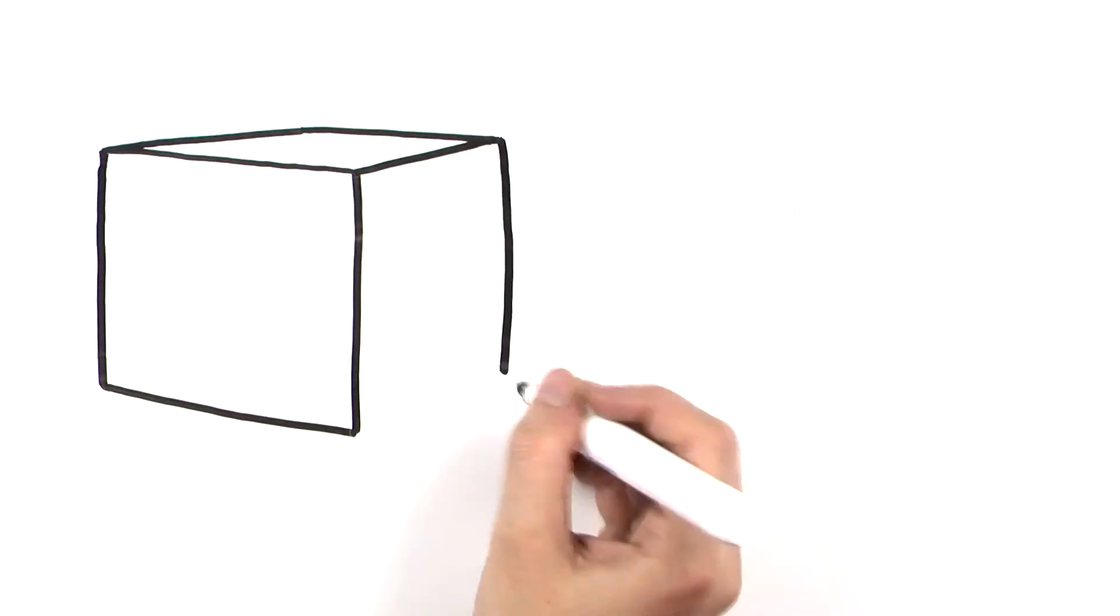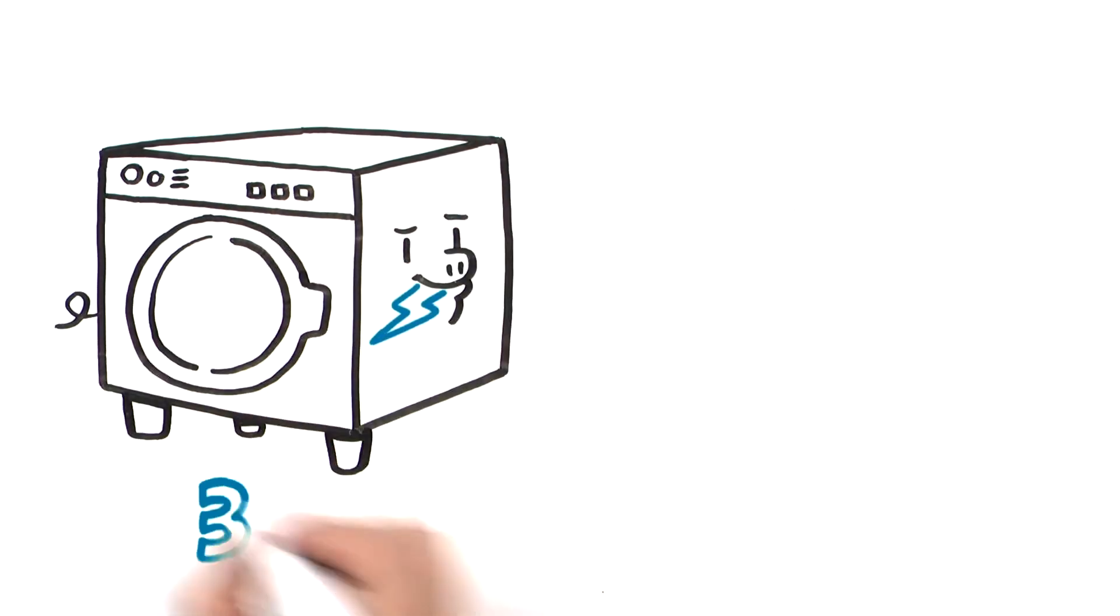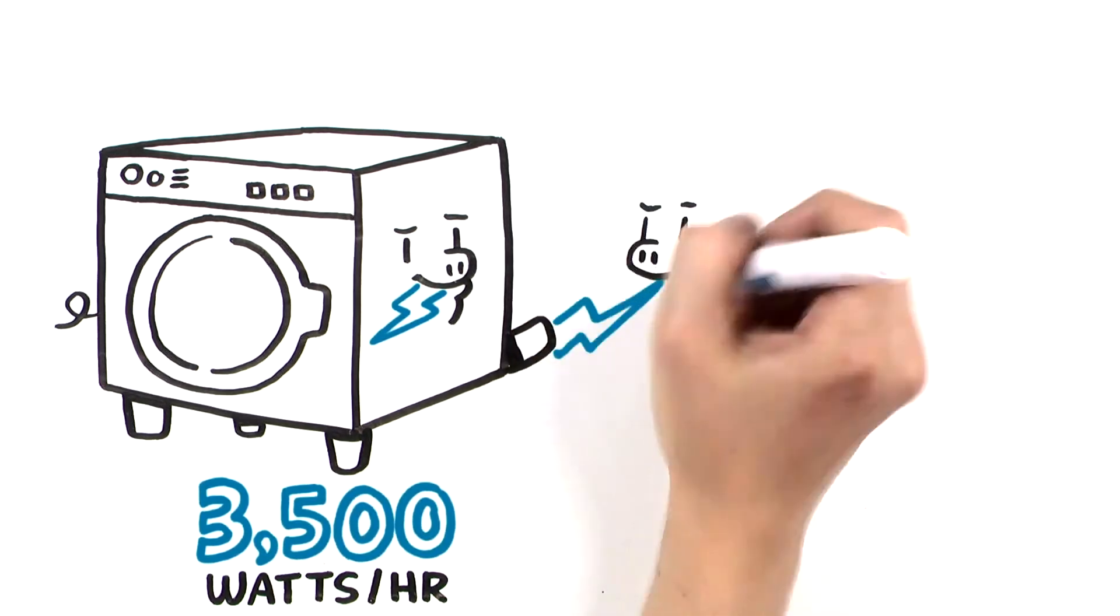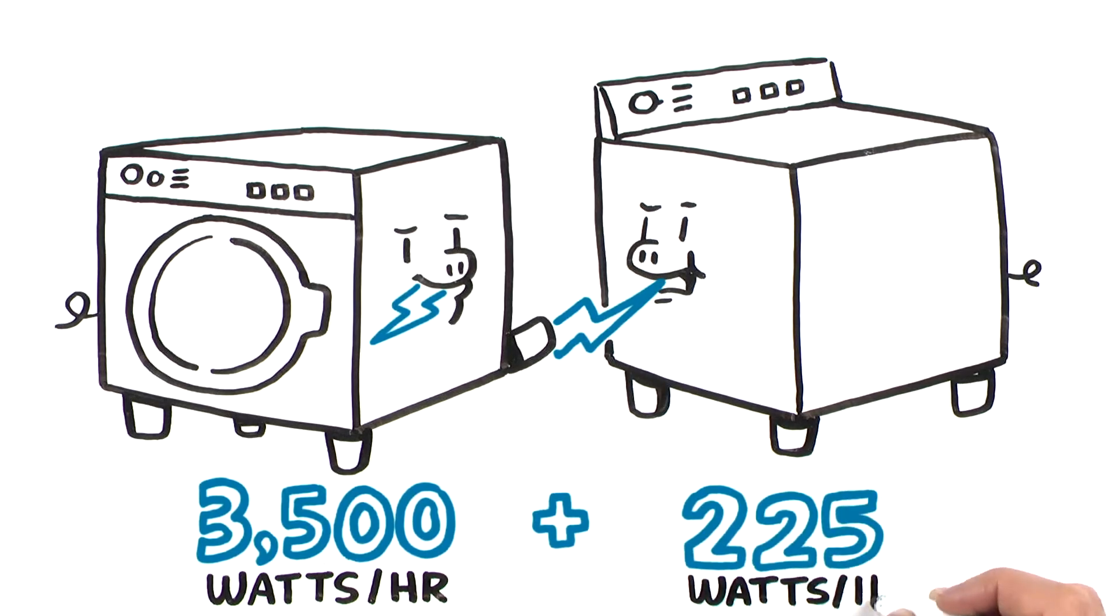Next up, head into your laundry room. Between your clothes dryer, which uses up to 3,500 watts of electricity per hour, and your washing machine, which uses up to 225 watts per hour, doing laundry is a huge energy drain.